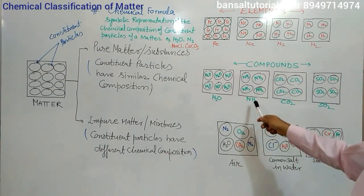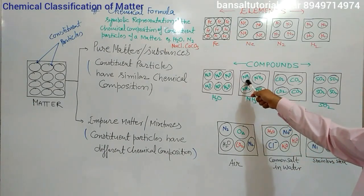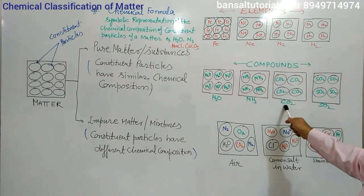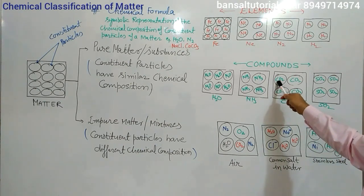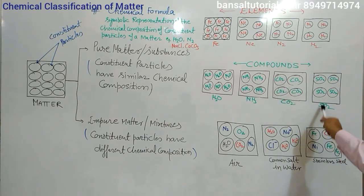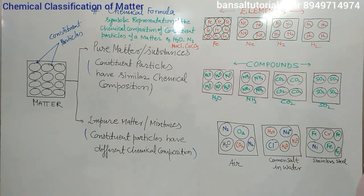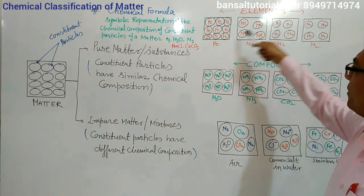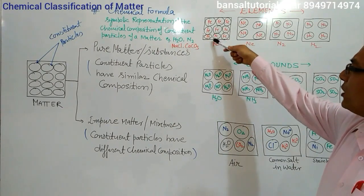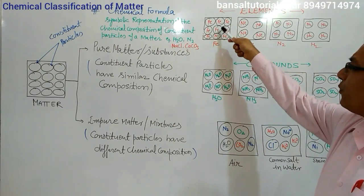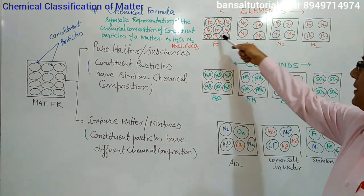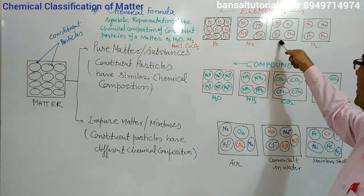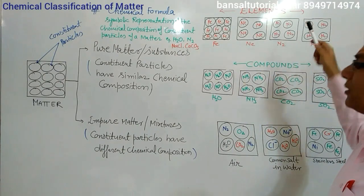If we see water, all particles of water are composed of two atoms of hydrogen and one atom of oxygen. It means all constituent particles of water have the same chemical composition, so it is pure. In the same way, ammonia is NH3, carbon dioxide is CO2, and sulfur dioxide is SO2. In these materials, all the constituent particles are composed of only one type of atom — iron atom, neon atom, nitrogen atom, hydrogen atom.